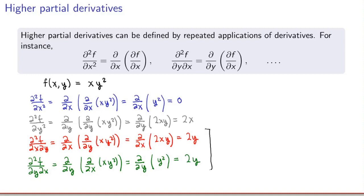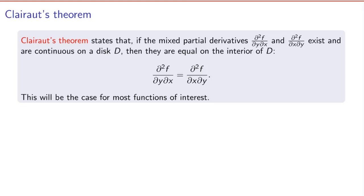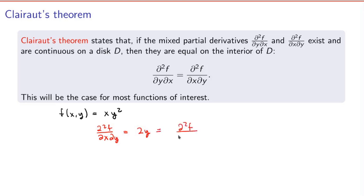The two mixed derivatives are actually equal — and this is not a coincidence. There is a very nice result called Clairaut's theorem that states that for most functions of interest, the mixed partial derivatives will be equal; in other words, it doesn't matter in which order you take the derivatives. The precise statement is that this is true if the mixed partial derivatives exist and are continuous. In our example with f(x, y) = xy², both mixed partial derivatives equal 2y, which is indeed continuous everywhere, so Clairaut's theorem applies.